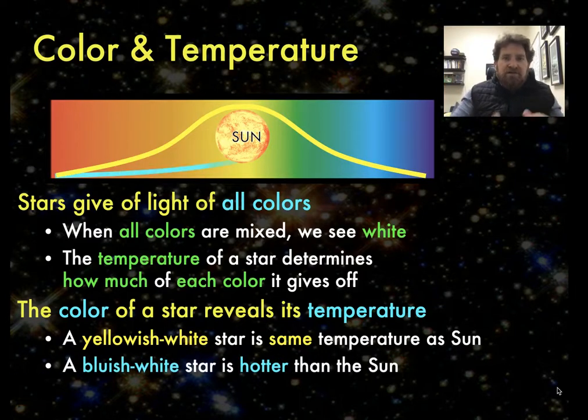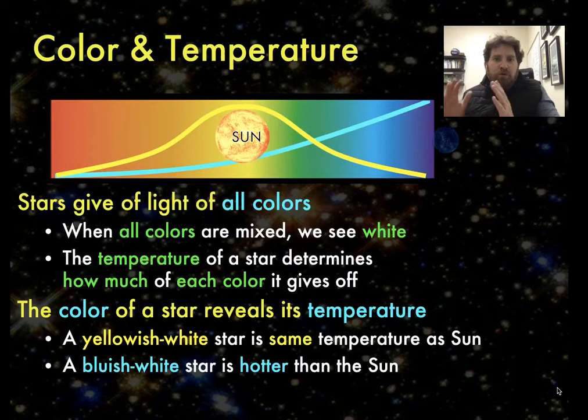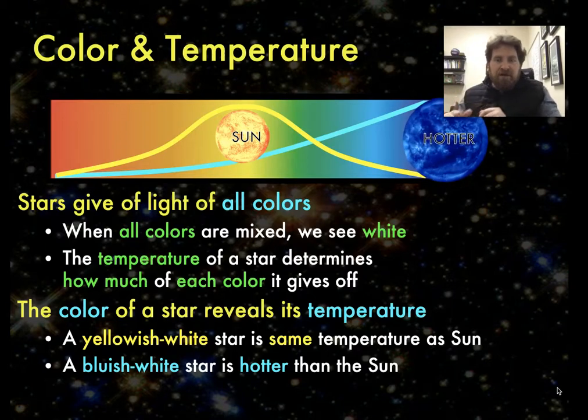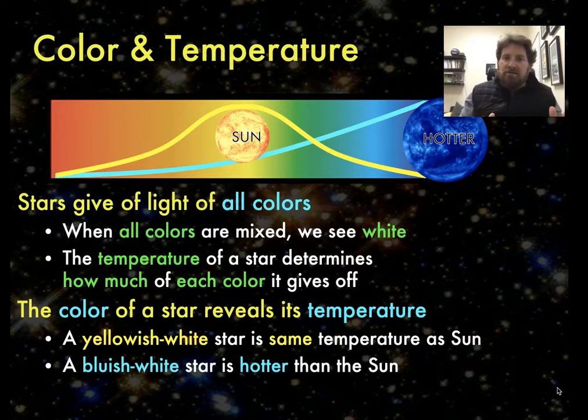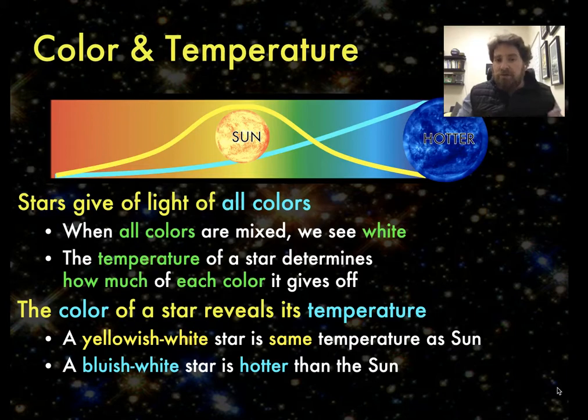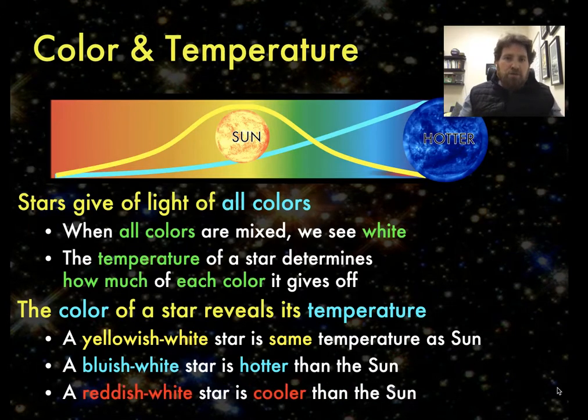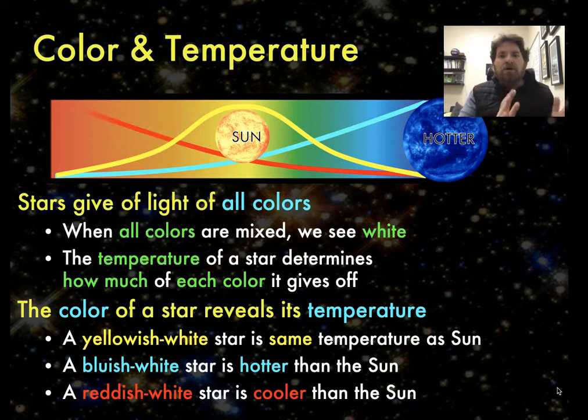Hotter stars give off more shorter wavelengths of light, more towards the bluer end of the spectrum, and therefore they appear bluish white to our eyes. And cooler stars give off more of the longer wavelengths of light, and therefore will appear to our eyes to be more reddish white.